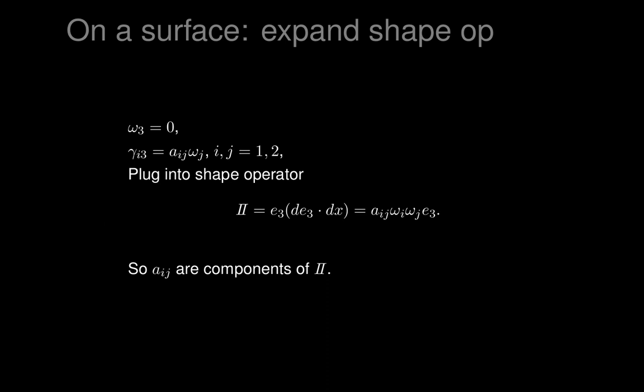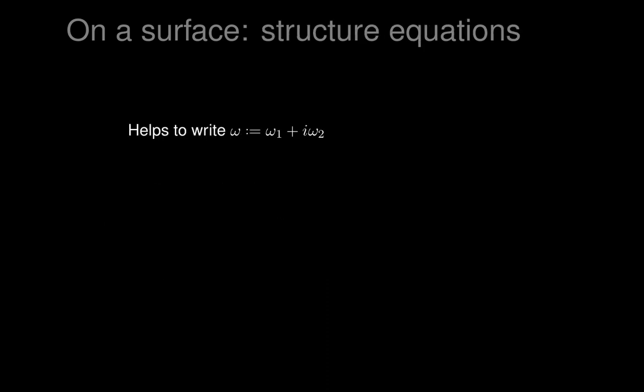The structure equations force gamma_i3 to be multiples A_ij omega_j, and those sit in the shape operator as the entries. So the shape operator has a symmetric matrix of coefficients A_ij, and expresses itself in this very simple way in terms of those coefficients. That's how we've been able to derive the structure equations of the surface - they're essentially the structure equations of Euclidean space together with omega_3 equals zero and the equation that gamma_i3's are certain multiples of the omegas.